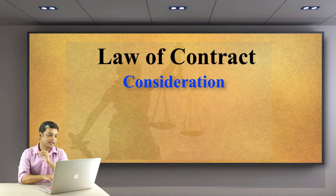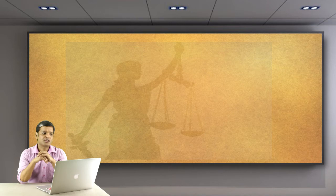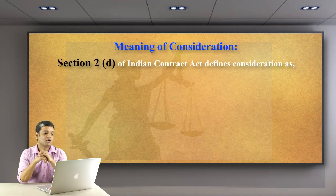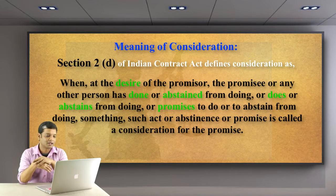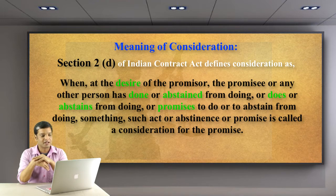Now let's check out the technical definition given in the Indian Contract Act. Section 2D of the Indian Contract Act defines consideration as: when at the desire of the promisor, the promisee or any other person has done or abstained from doing, or does or abstains from doing, or promises to do or to abstain from doing something.